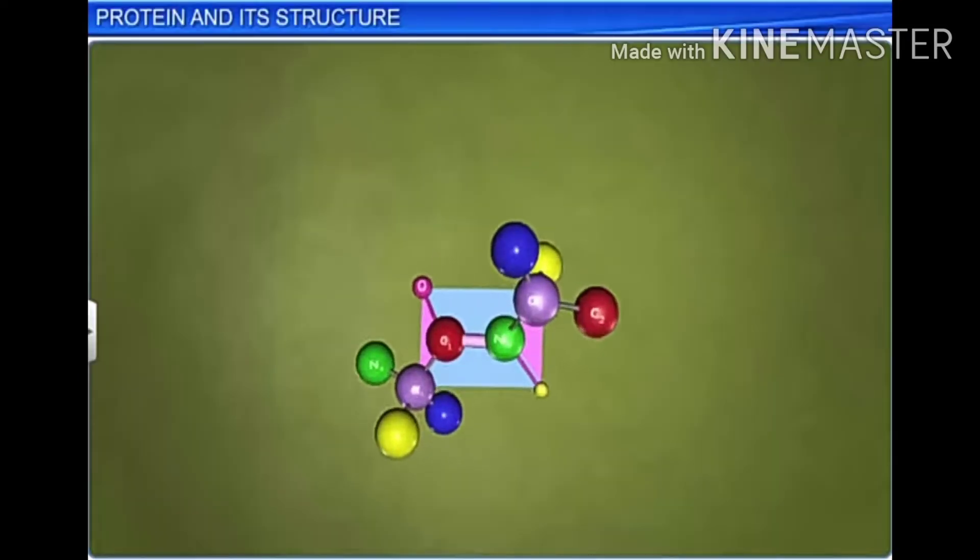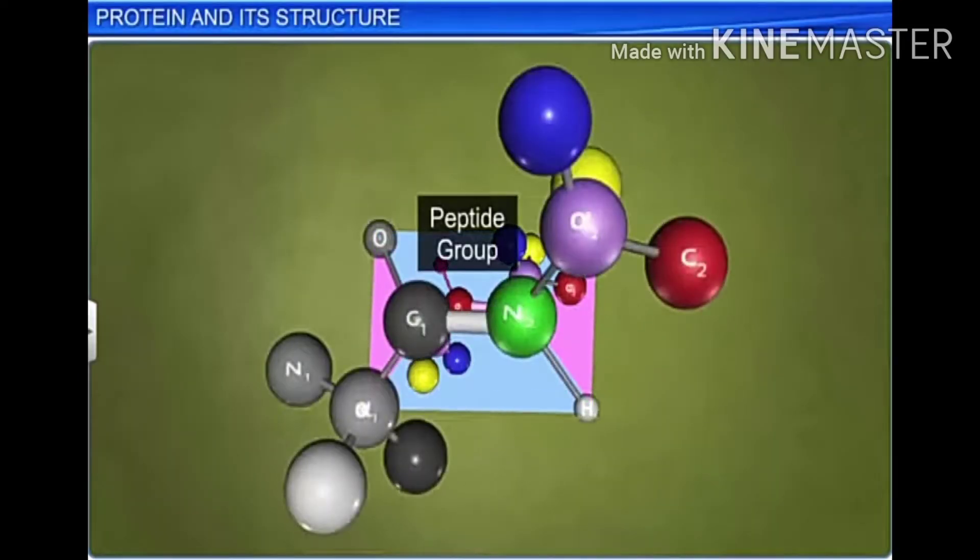In a heteropolymer, there are different types of monomers repeating n number of times.